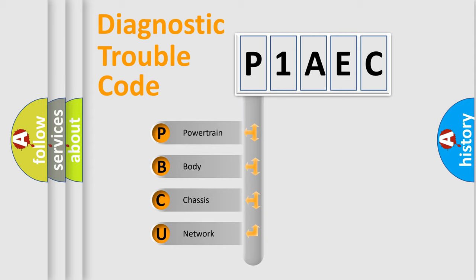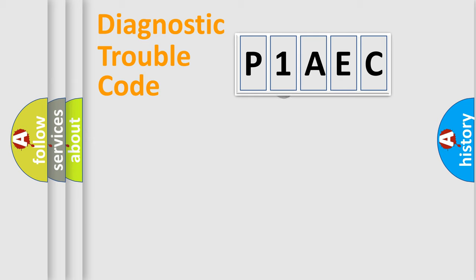We divide the electric system of automobile into the four basic units: Powertrain, Body, Chassis, and Network. This distribution is defined in the first character code.